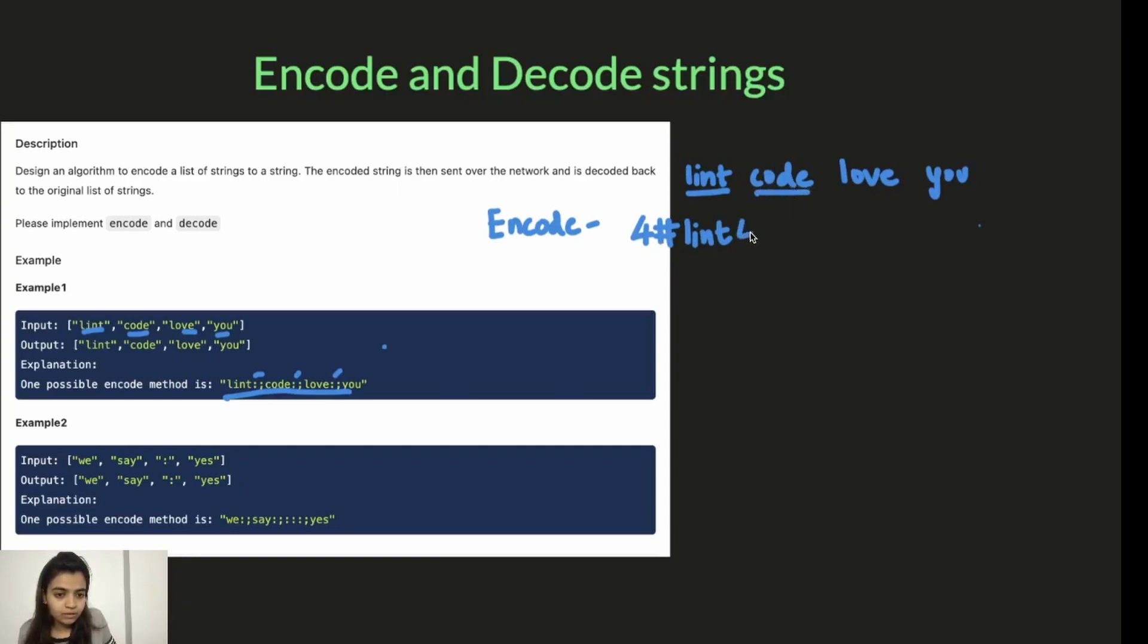Length of code is four. Then add a hash and then code. Append the word. Length of love is four. Add a hash and append the word. Length of you is three. Add a hash, append the word. So this will be our string, the string that is sent over the network.